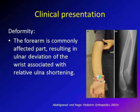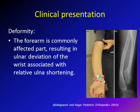An important clinical presentation of MHE is deformity, which commonly affects the forearm. The osteochondroma typically affects the distal ulna, making it relatively short, while the radius becomes bowed in that direction. The patient can thus present with forearm deformity.